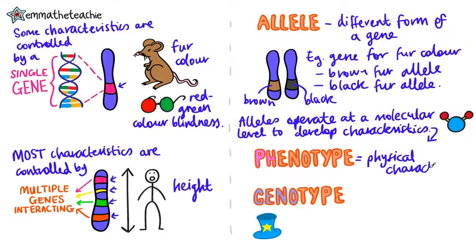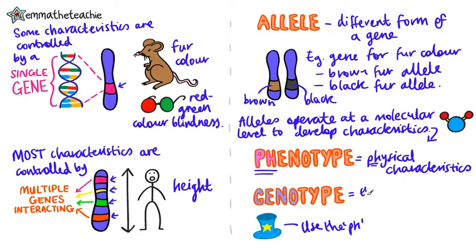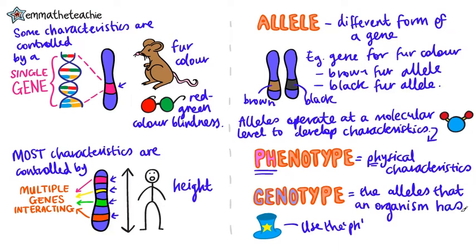Phenotype is just the appearance of the organism. Here's a hint: use the 'ph' to help you remember that phenotype refers to physical characteristics. Genotype is then just the alleles that an organism has inside it. Remember, an allele is just a different form of a gene, so the 'geno' part of the word just means alleles.